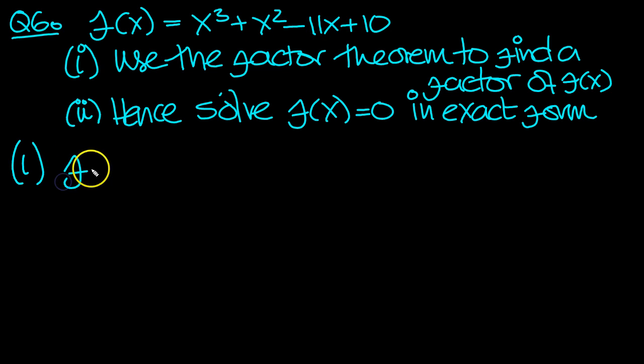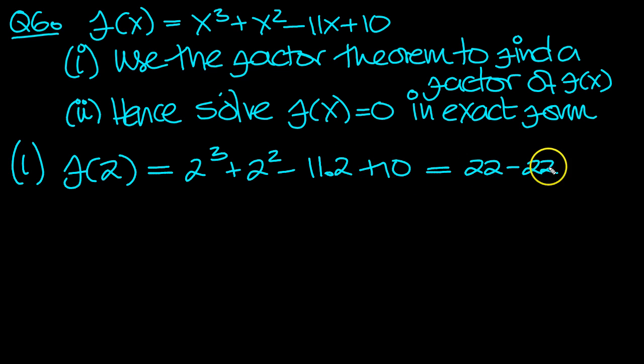So f of 2 then: 2 cubed plus 2 squared minus 11 times 2 plus 10 is equal to 8 plus 4 is 12 plus 10 is 22 minus 22, because 11 times 2 is 22. So x minus 2 then is a factor.